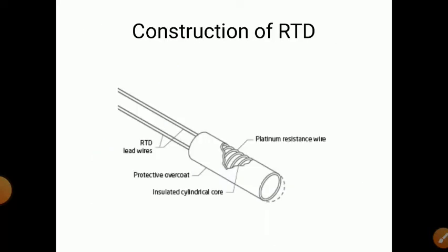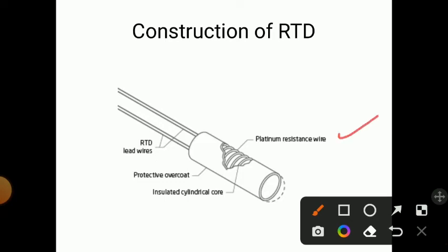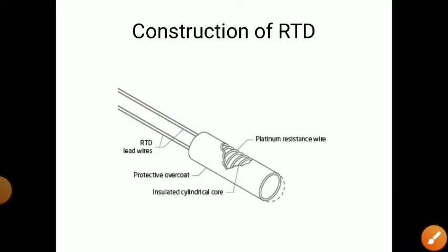RTD stands for Resistance Temperature Detector. It consists of a platinum resistance wire coated with a protective covering, kept in an insulated cylindrical core. Two lead wires are taken out for measuring the resistance.